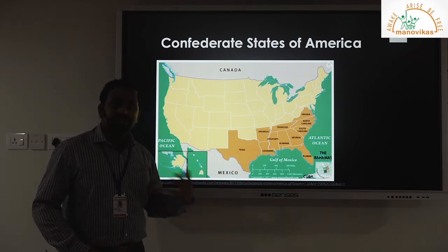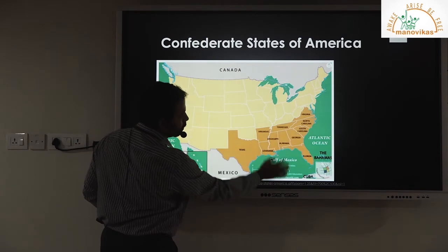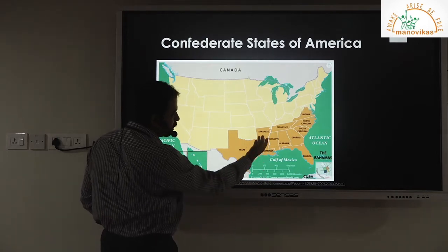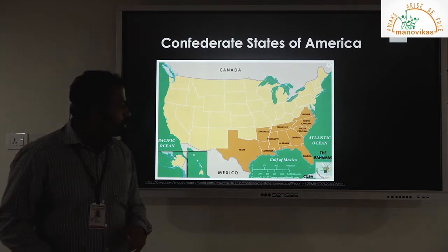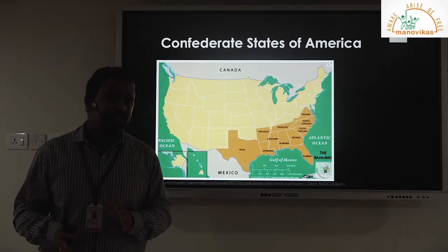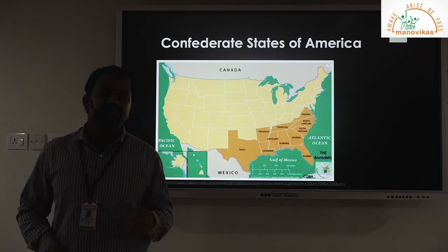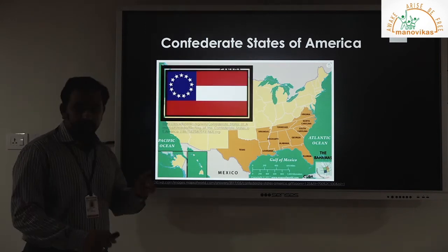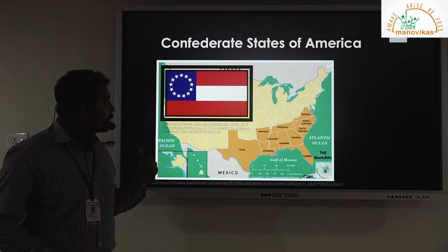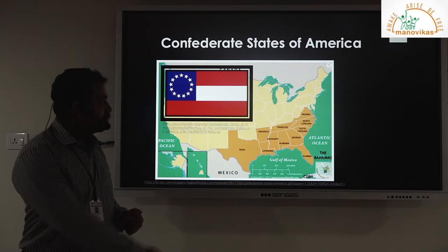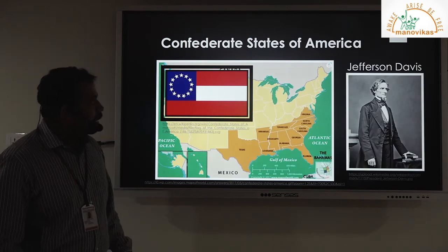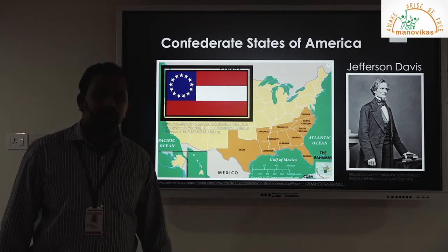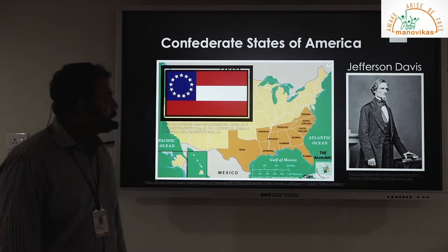South Carolina was joined by other states: Virginia, North Carolina, Tennessee, Georgia, Florida, Alabama, Mississippi, Louisiana, Arkansas, and Texas. A new country was formed from 11 former states of the United States of America — these were the states in favor of slavery. This new country had its own flag, its own army, and its own president. Their first and last president was Jefferson Davis, who ruled from 1861 till 1865.